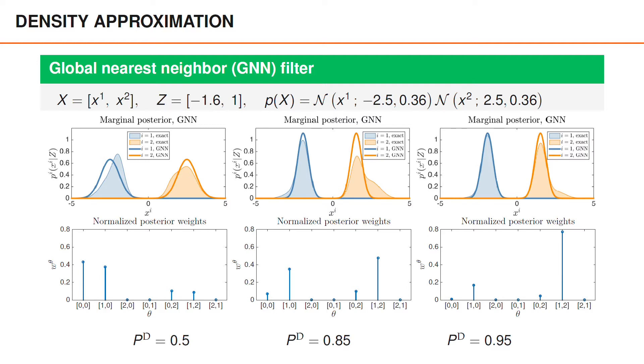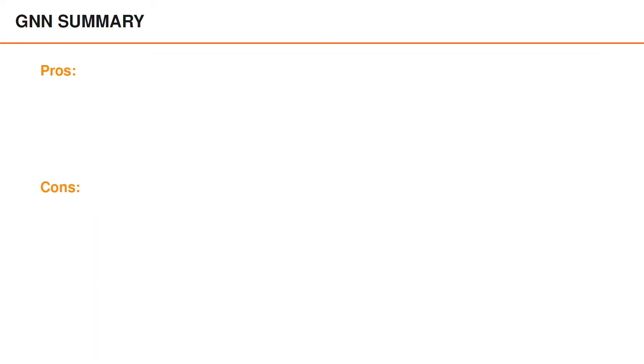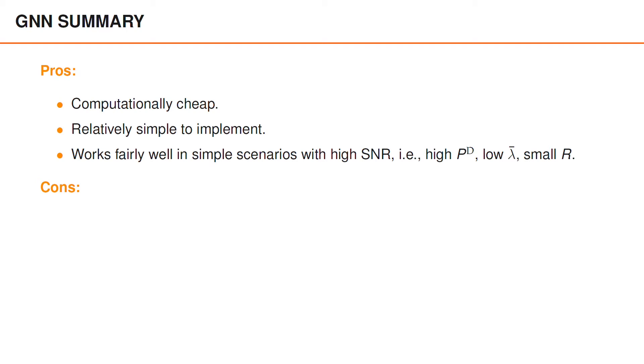We can summarize GNN with some pros and cons. Positive is that GNN filters are computationally cheap tracking algorithms and are relatively simple to implement. There is also empirical evidence that shows GNN filters work fairly well when the signal-to-noise ratio, or SNR, is high. So in other words, when PD is high, the clutter intensity lambda is low, and the measurement noise covariance is small.